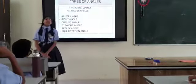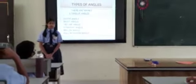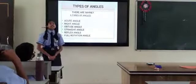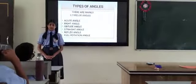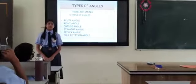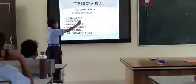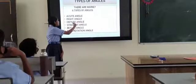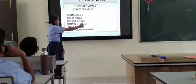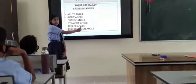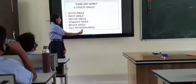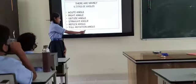So what are the types of angles? There are six types of angles. First one is acute angle, then right angle, third one is obtuse angle, straight angle, reflex angle, and full rotation angle.